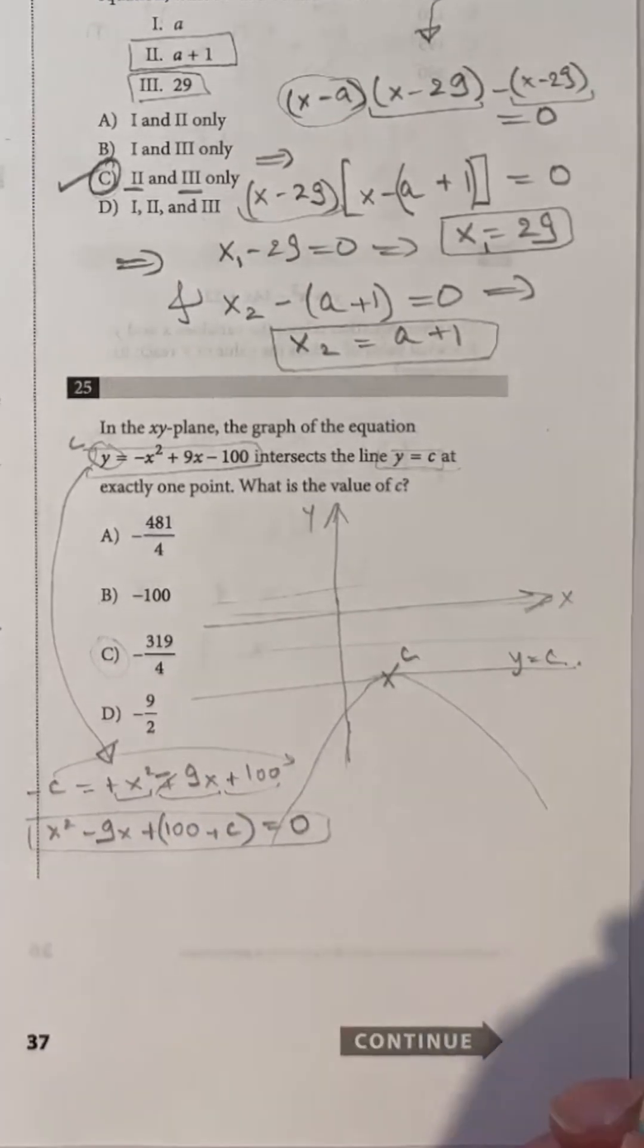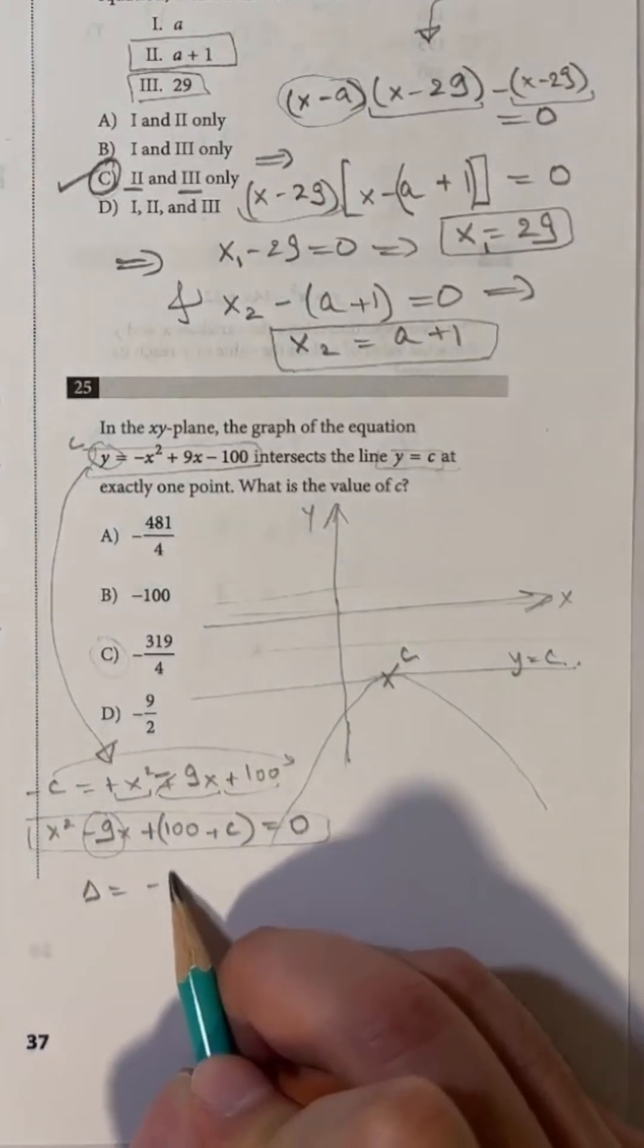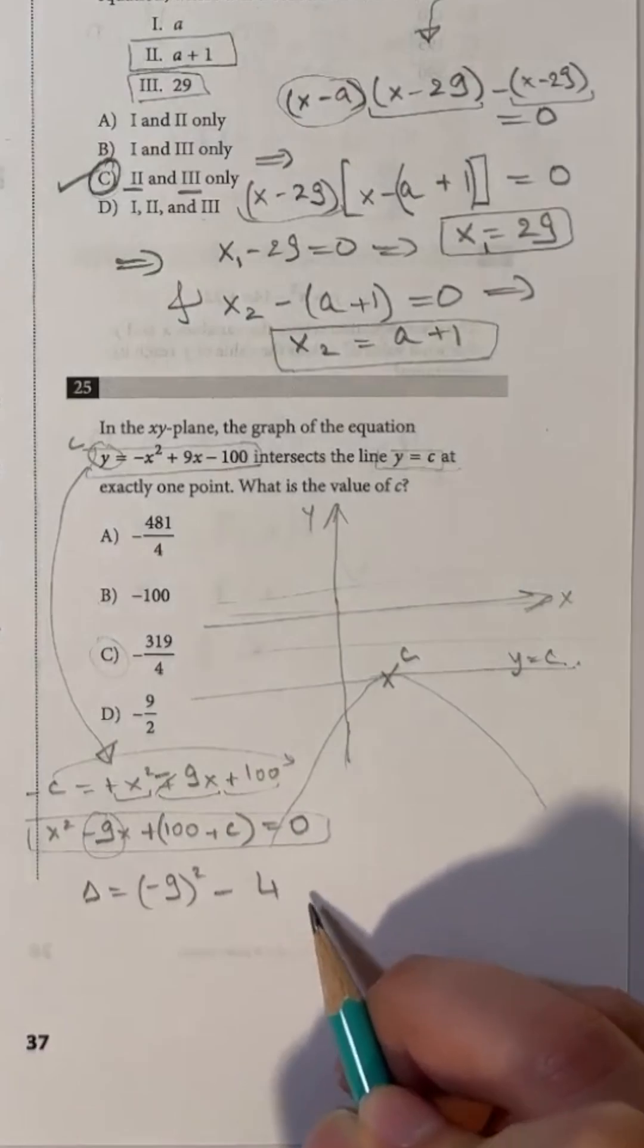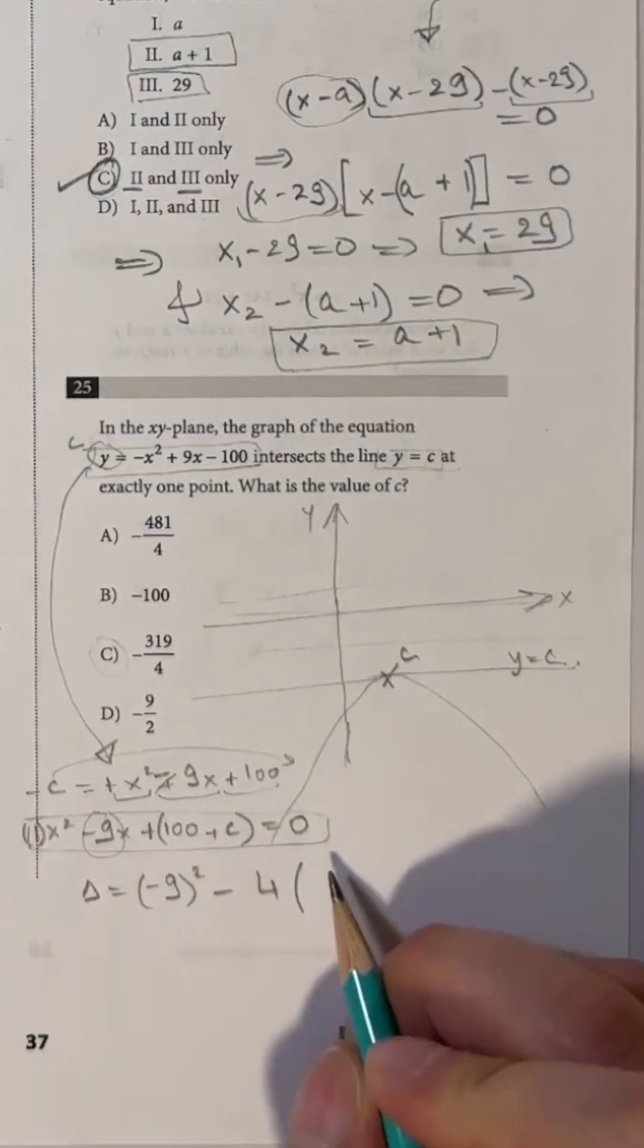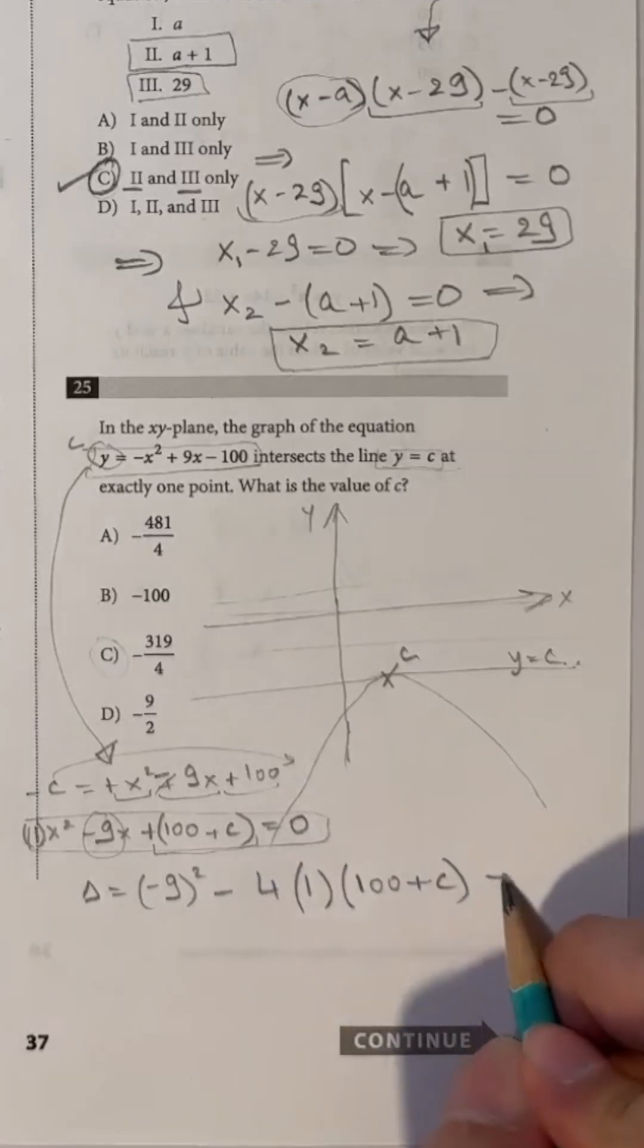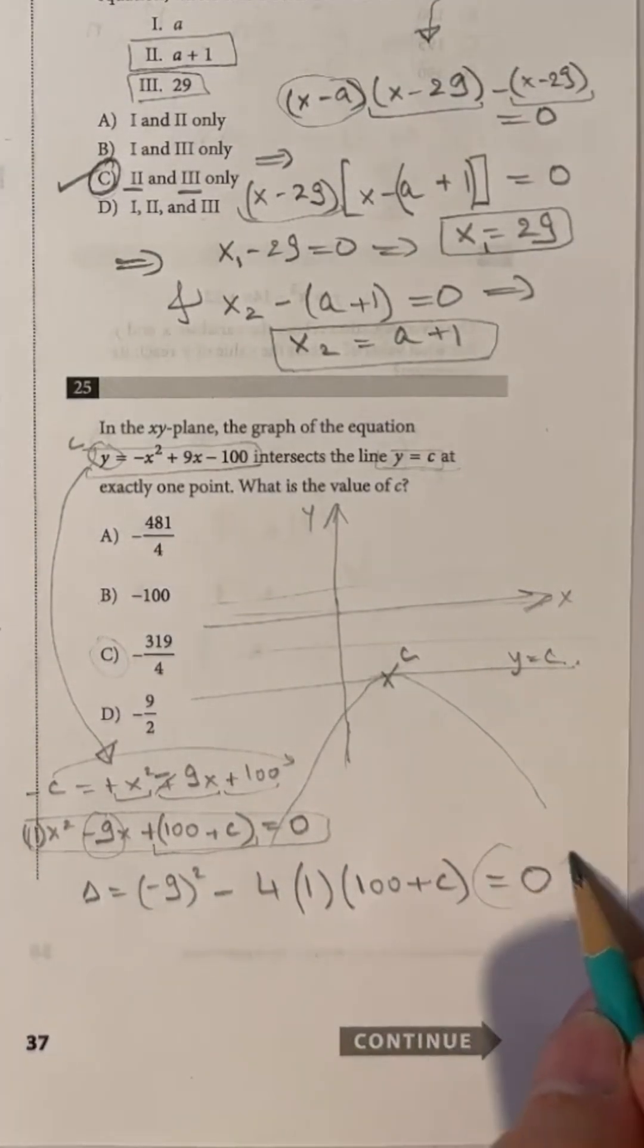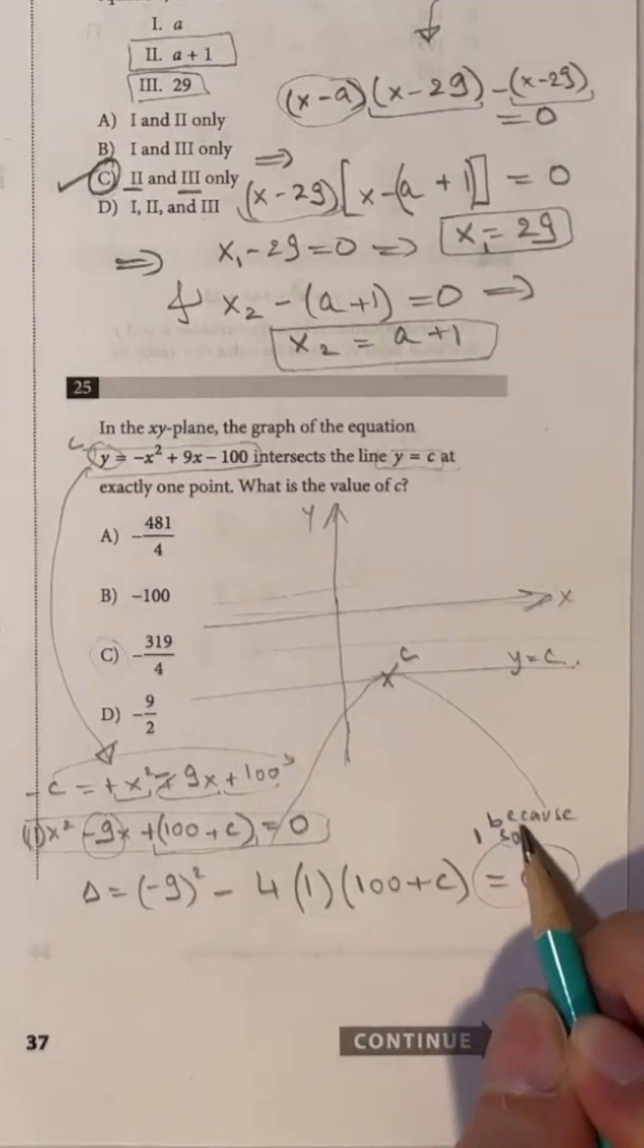And now we have a quadratic equation which must have only one real solution. And therefore the discriminant delta equals the coefficient of x which is minus 9 squared minus 4 times the coefficient of x squared which is 1 multiplied by the constant which is 100 plus c.